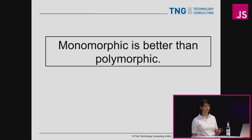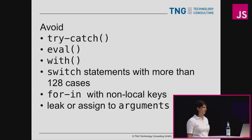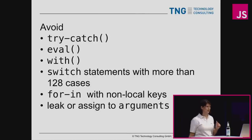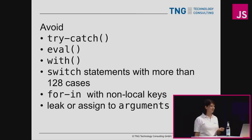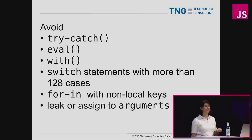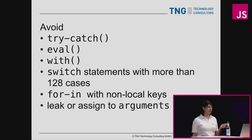A few more things to avoid: try-catch statements, anything with eval (V8 won't optimize it at all; SquirrelFish only handles simple cases), avoid 'with', don't use switch statements with more than 128 cases (they can't be optimized), keep your for-in loop keys local (don't forget the var), and don't leak your arguments or assign to them — any of these will prevent the optimizing compiler from running.